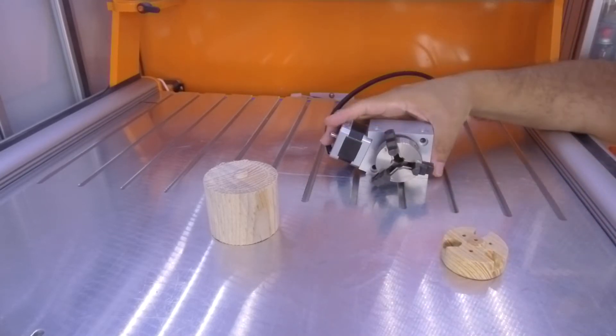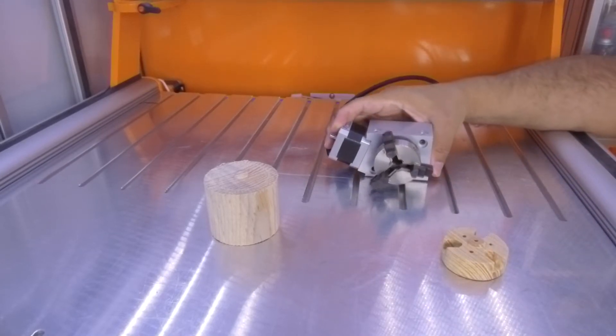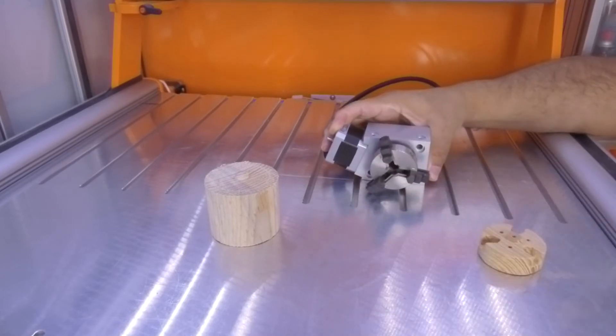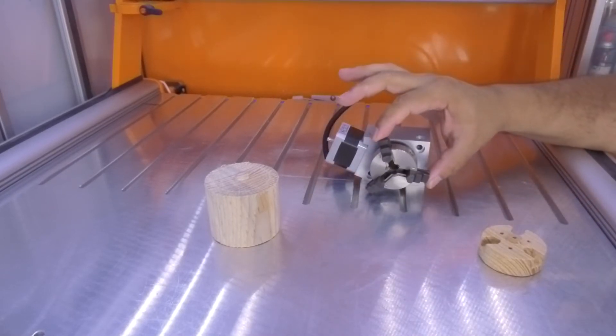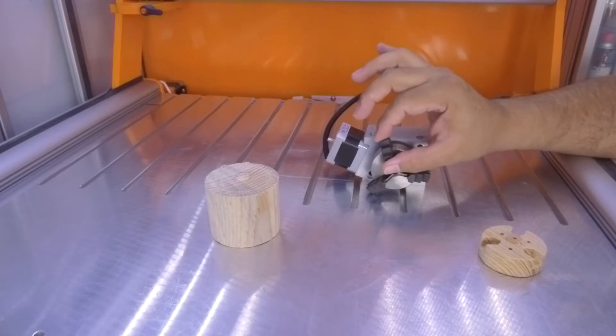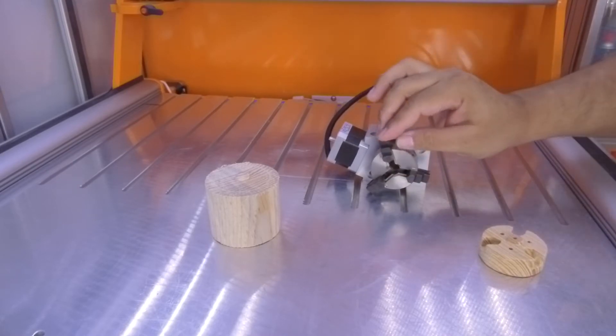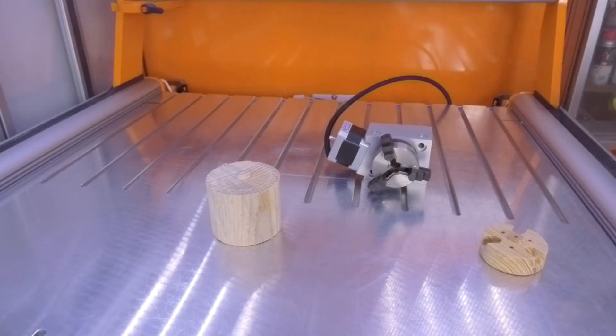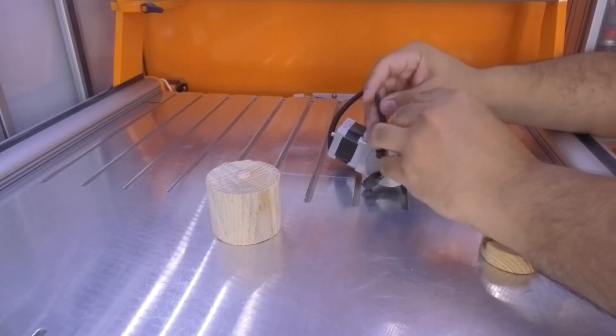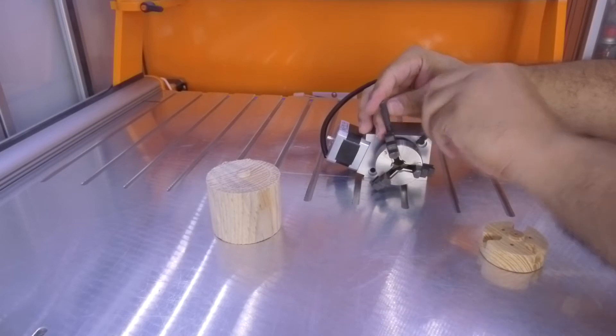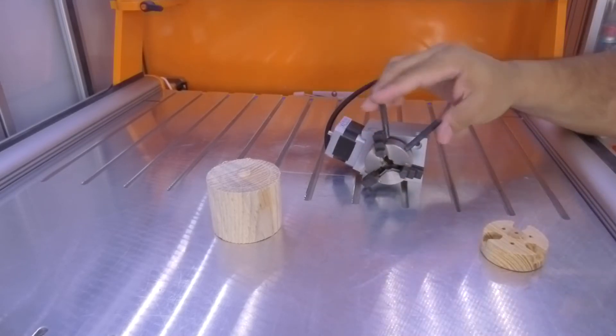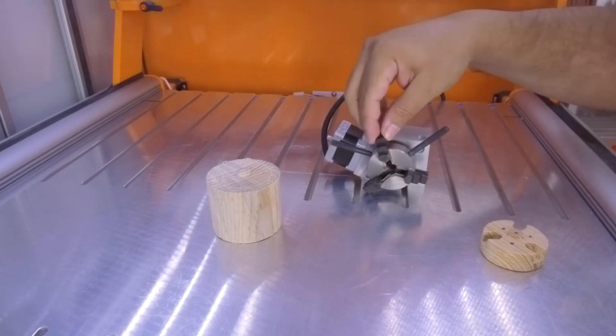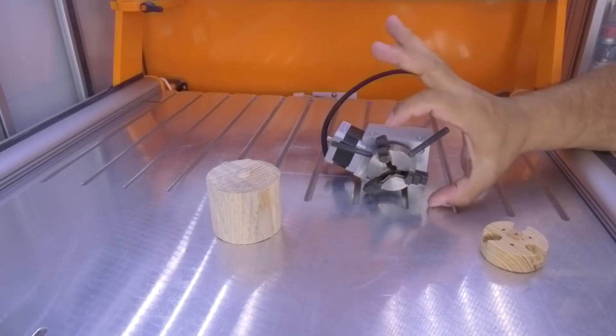When you use large materials with the 4-axis, you need to raise this to be able the chuck to rotate here. If you use larger materials, you can flip these jaws. You can take them out like this, and if you flip them you have a larger diameter.